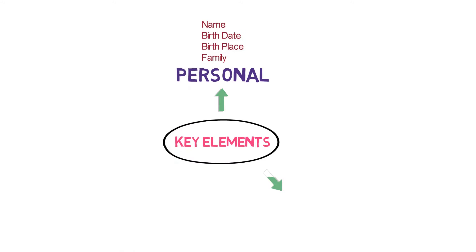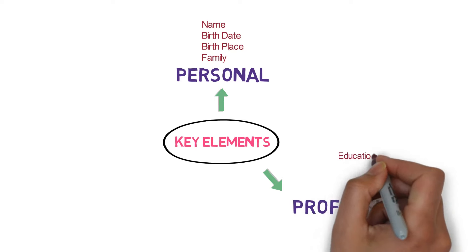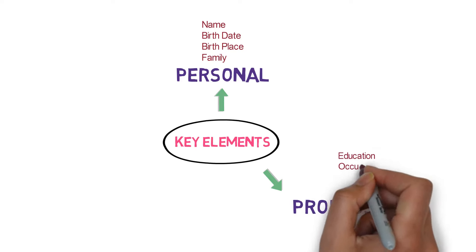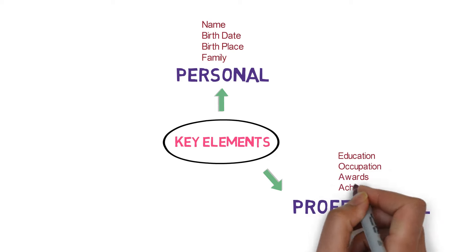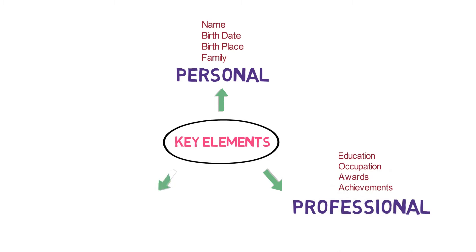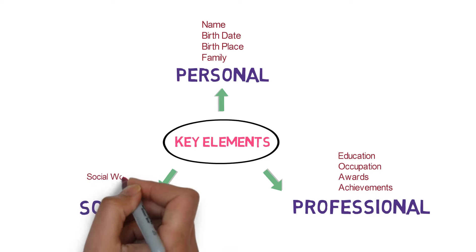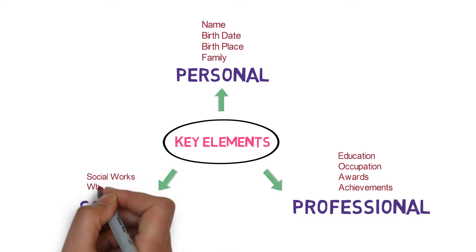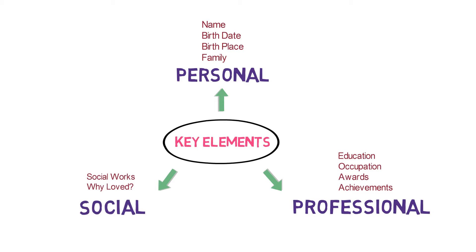Second, professional details, including education, current occupation of the person, awards or recognition, and achievements at work. Third, social details, including social works or the reason why the society admires him or her.